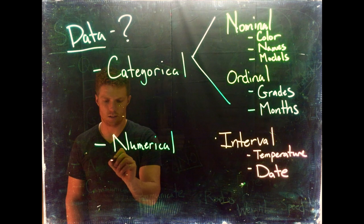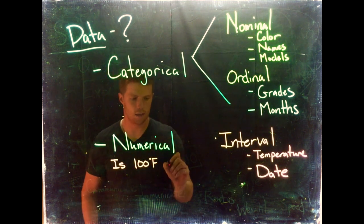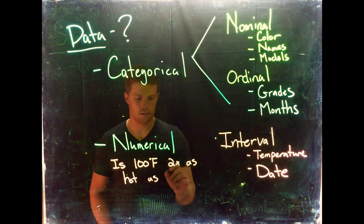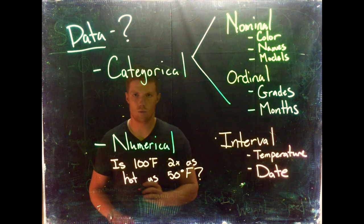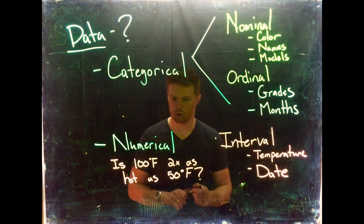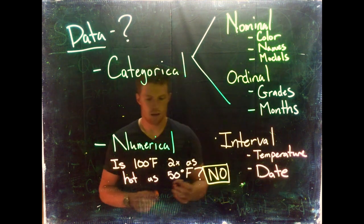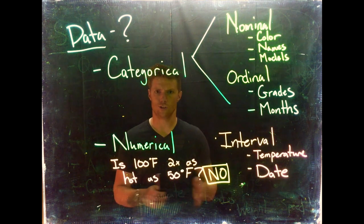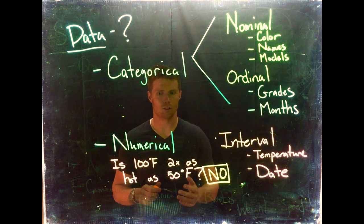Let's look at an example. Let's ask ourselves: is 100 degrees Fahrenheit two times as hot as 50 degrees Fahrenheit? What do you think? The answer, as it turns out, is no. The kicker here is because the zero point for this scale is kind of arbitrarily set - it's set at basically 32 degrees less than the freezing point of water. It's kind of arbitrary.